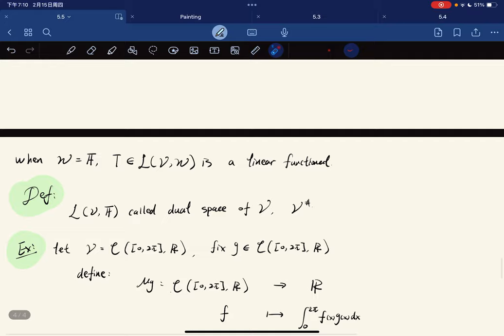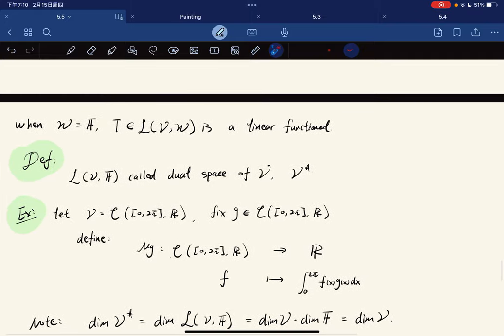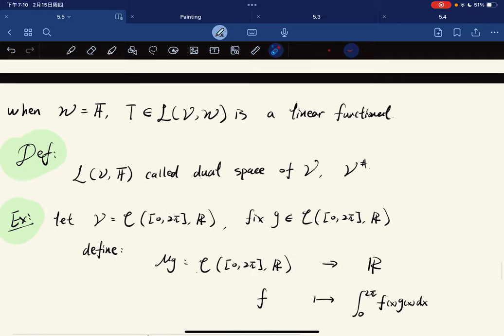Now we move on to linear functionals. When W is the field, this is called the linear functional, and this is called the dual space of V. V* or V-star represents the same object.